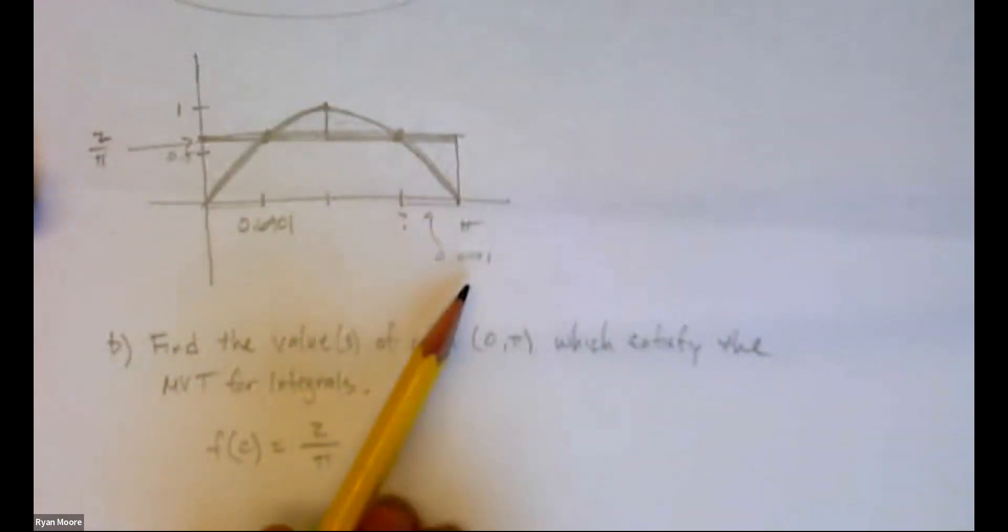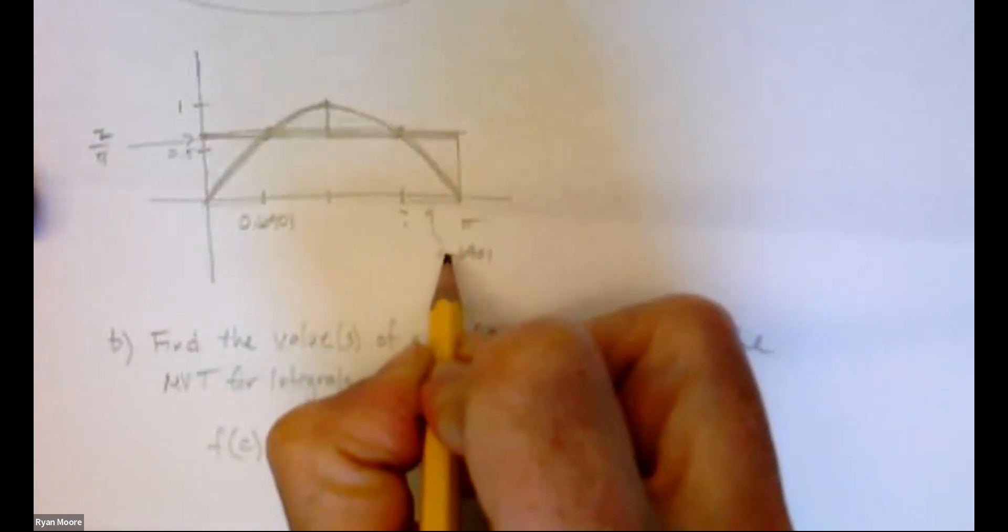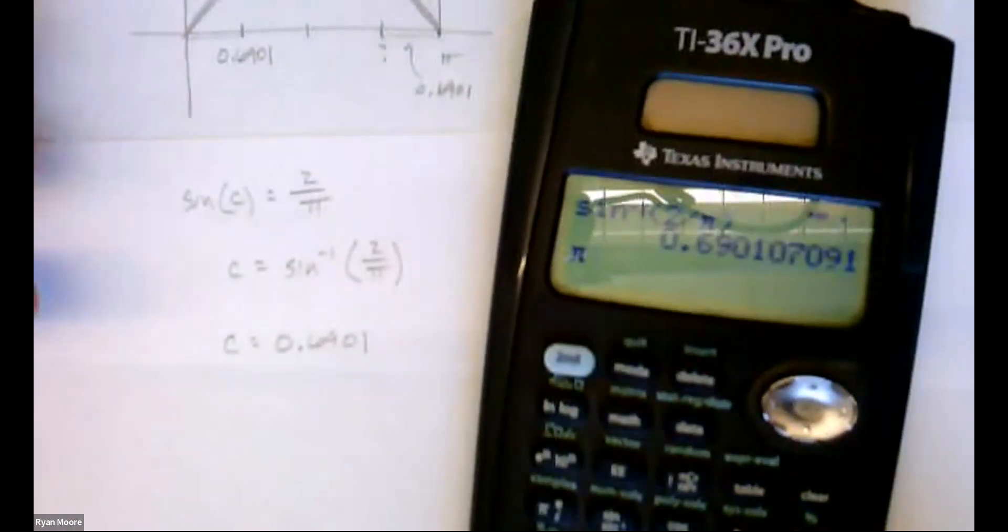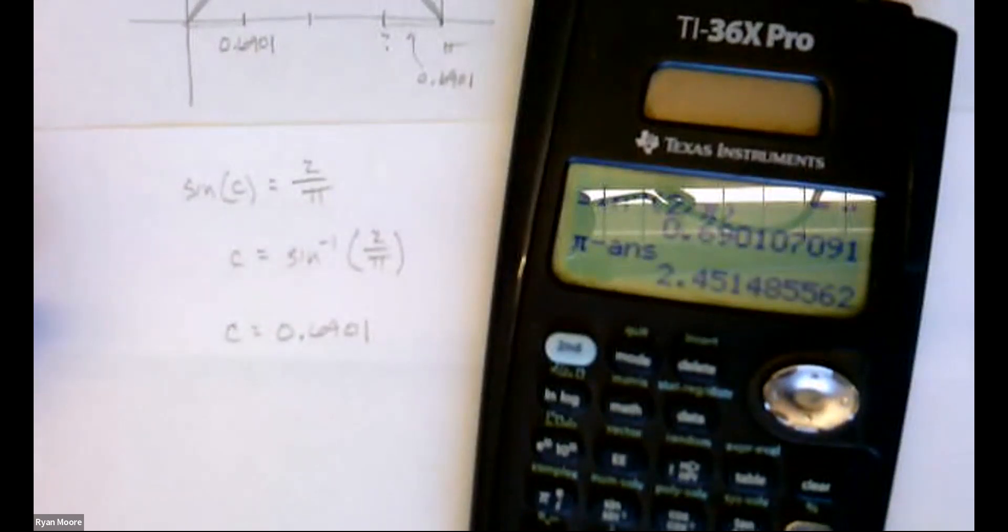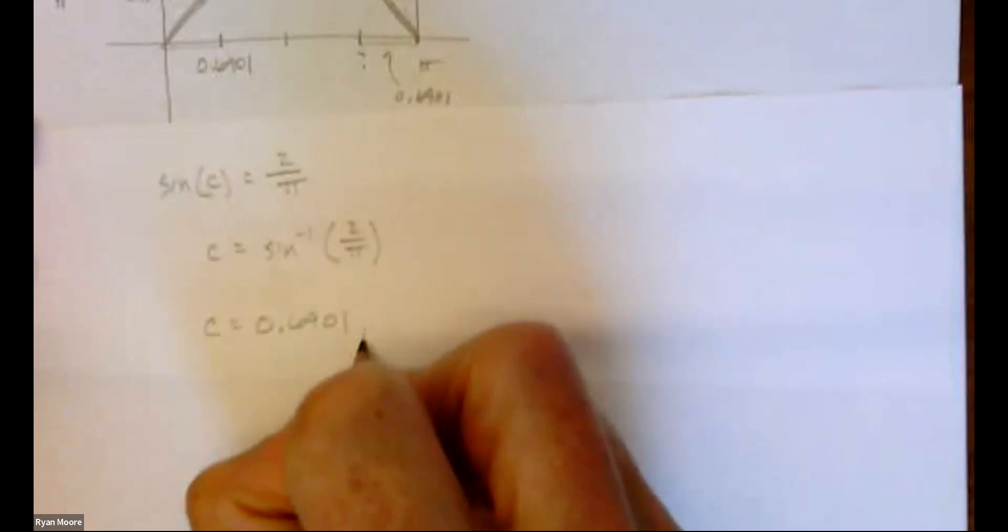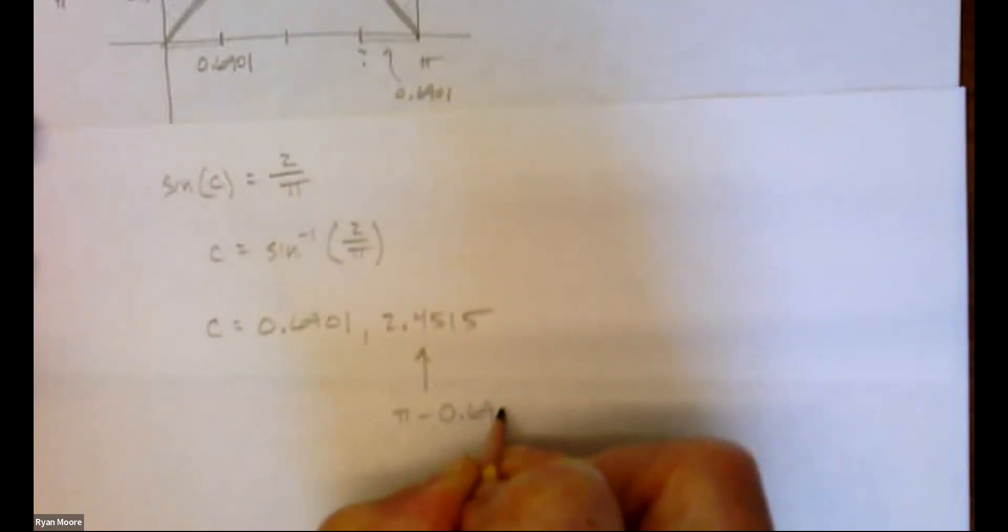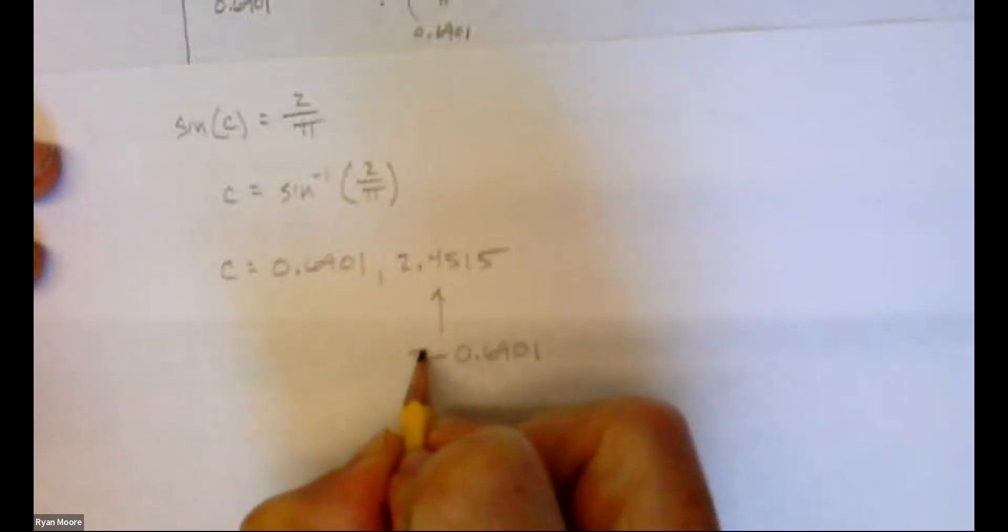So to find where this is, take pi and subtract that same length. So what's it going to be if I go pi minus that answer? 2.4515. And again, how did I get that? With my knowledge of sign and the symmetry and the drawing was certainly helpful. I could think about what that would have to be. There you go. Very nice. Using f average and MVT for integrals.